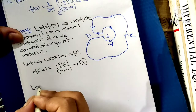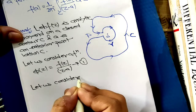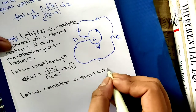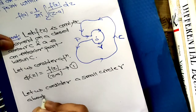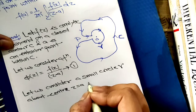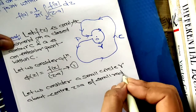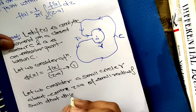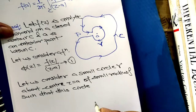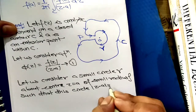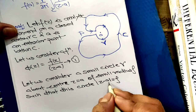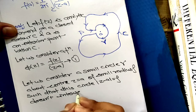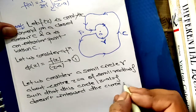Let us consider a small circle gamma about center z equals a of small radius ρ. The equation of this circle in complex form is |z minus a| equals ρ, where a is the center and ρ is the radius. This circle does not intersect the curve C.